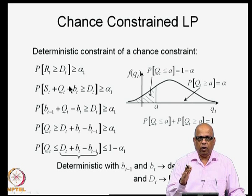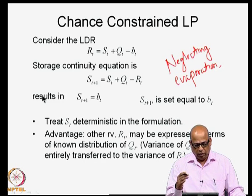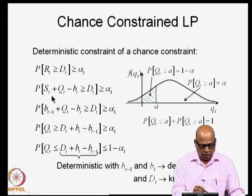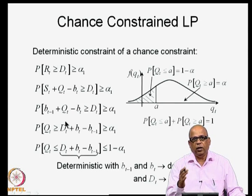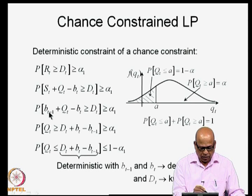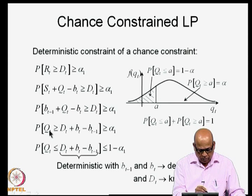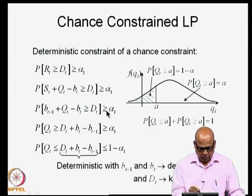The chance constraint is: Probability(R_t ≥ D_t) ≥ α_1. To use in a linear programming algorithm, we need to state this in a deterministic form — the deterministic equivalent. We substitute R_t = S_t + Q_t − B_t, and since S_t = B_{t−1}, this becomes: Probability(B_{t−1} + Q_t − B_t ≥ D_t) ≥ α_1. Taking Q_t to the left-hand side: Probability(Q_t ≥ D_t + B_t − B_{t−1}) ≥ α_1. This is of the form Probability(X ≥ A) ≥ α_1.